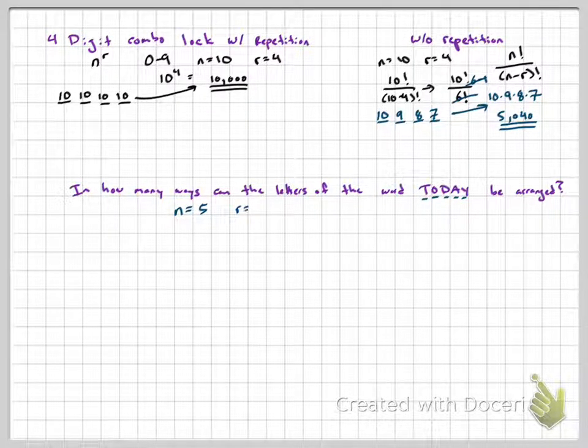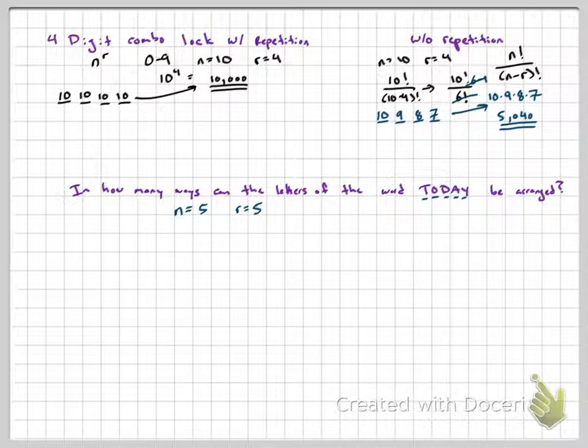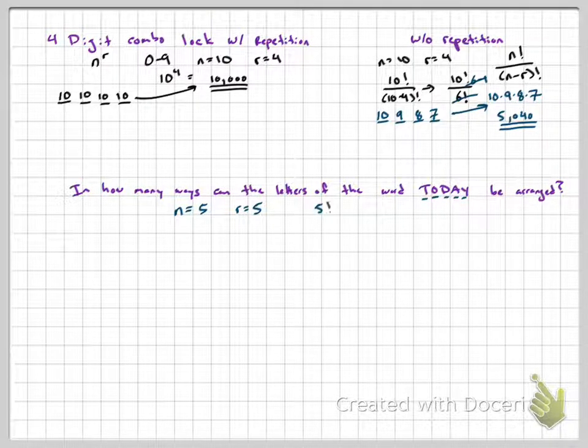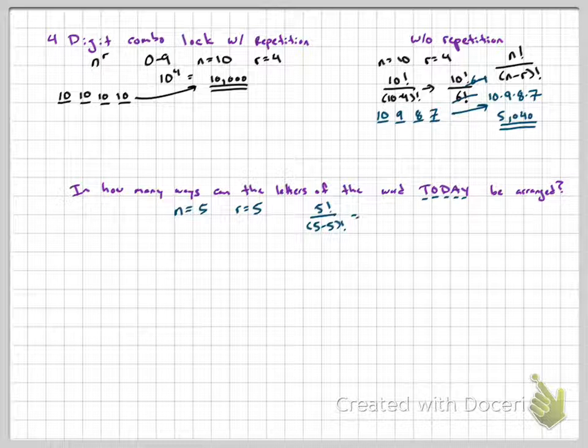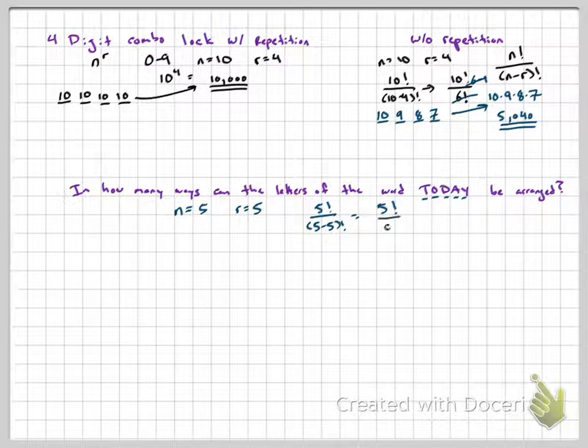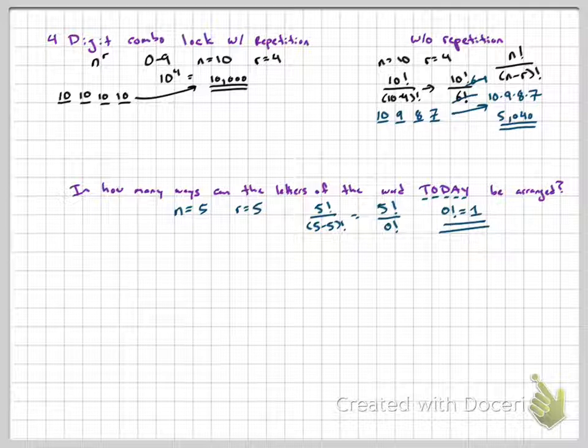And we're actually choosing 5 times. Because we have to use every single letter. That's why we have to choose 5 times. So I have 5 factorial over 5 minus 5 factorial, which ends up being 5 factorial over 0 factorial. Now, 0 factorial is equal to 1. It's not 0. Alright. That's very important to understand.